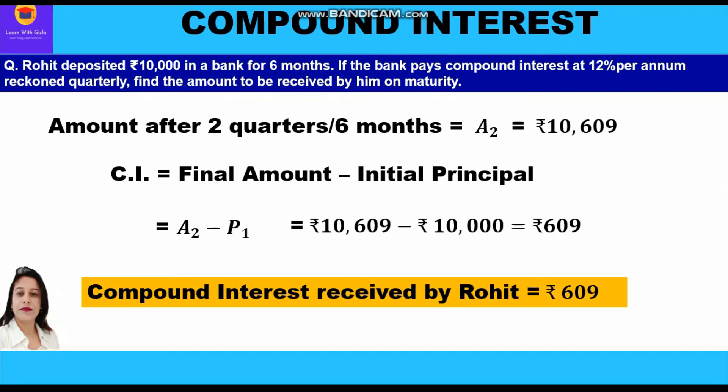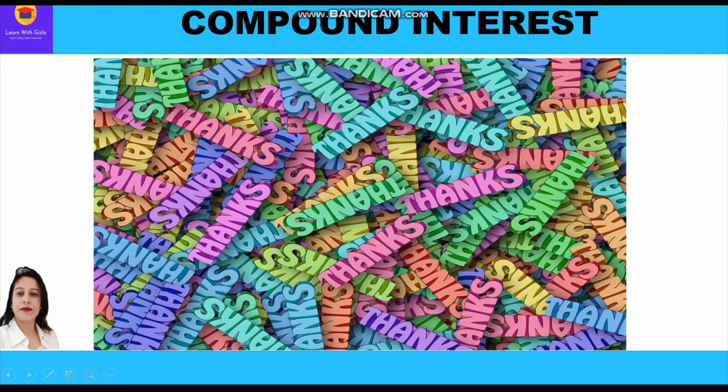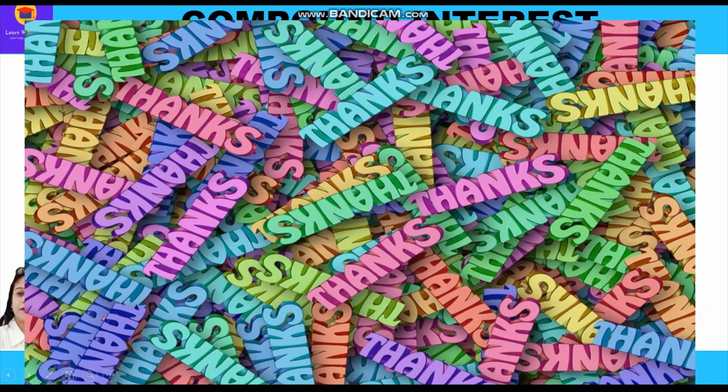I hope everyone got the right answer and understood this question. The method to find the amount and the compound interest using the unitary method is now clear. Please do like and subscribe to my channel. Thank you everyone, have a good day.